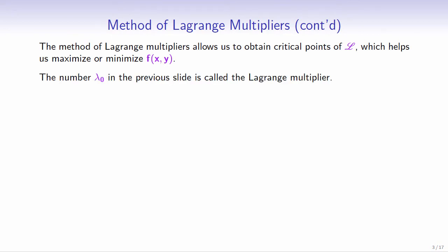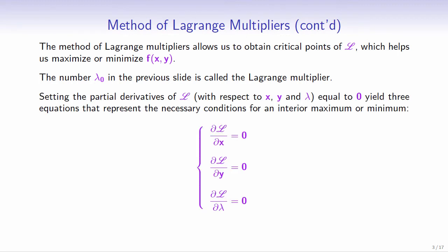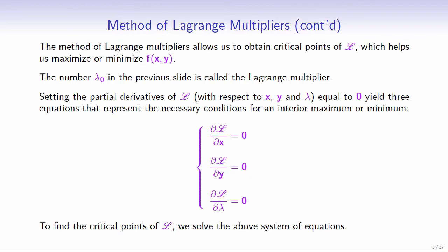The number lambda naught is called the Lagrange multiplier. Setting the partial derivatives of L equal to 0 yields three equations that represent the necessary conditions of an interior maximum or minimum. To find the critical points of L, we solve the system of equations.